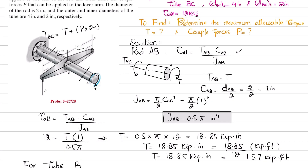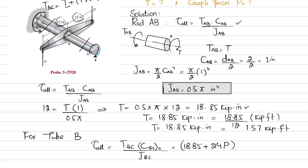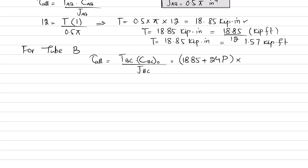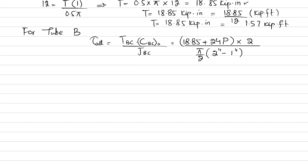Substituting T = 18.85 kip·inch, T_BC = 18.85 + 24P. The outer radius c_BC = 4/2 = 2 inches. For the hollow tube, J_BC = π/2 · (c_outer⁴ − c_inner⁴) = π/2 · (2⁴ − 1⁴), since c_inner = 2/2 = 1 inch. So the equation becomes: 12 = (18.85 + 24P) · 2 / [π/2 · (2⁴ − 1⁴)].